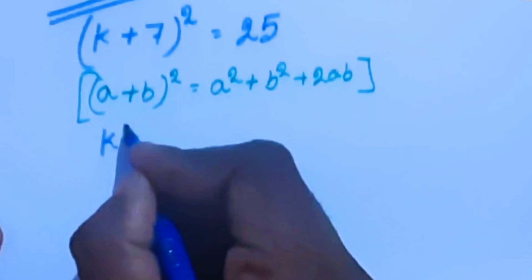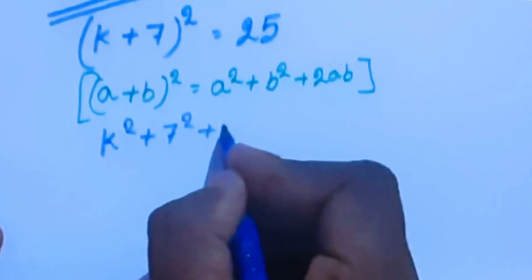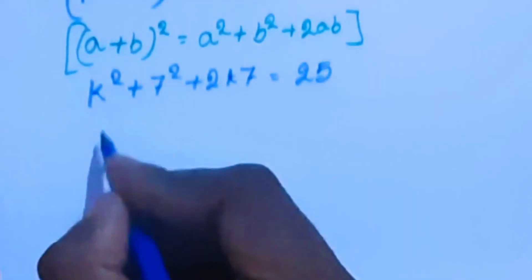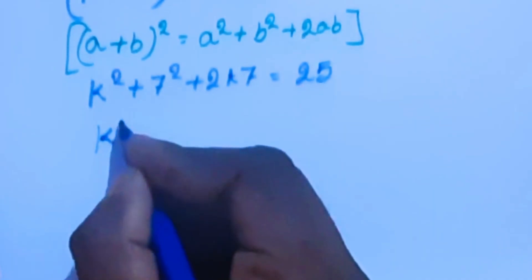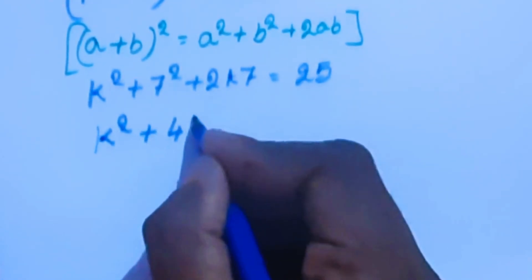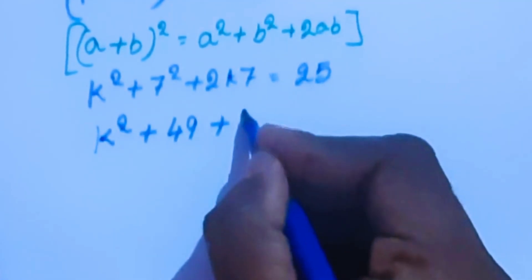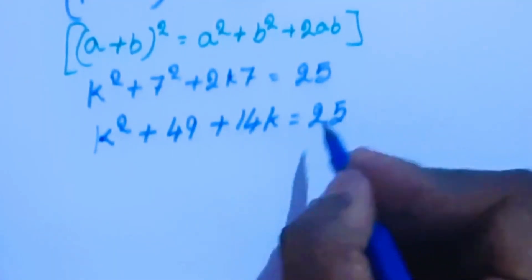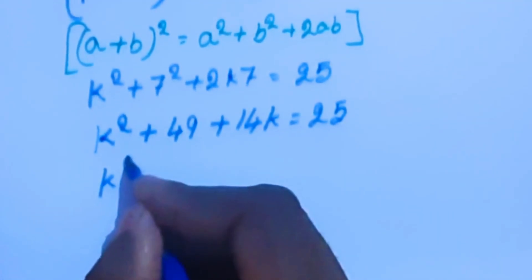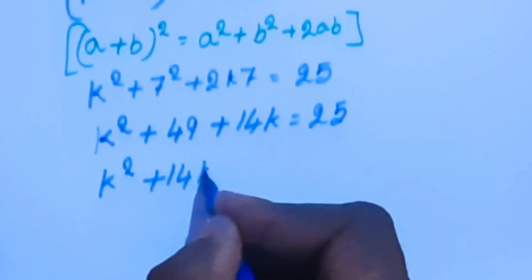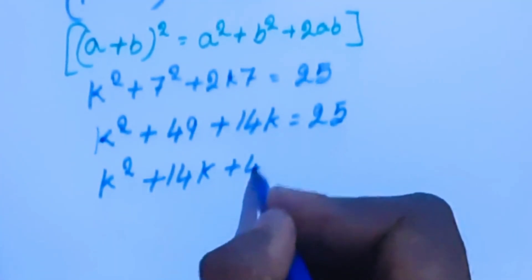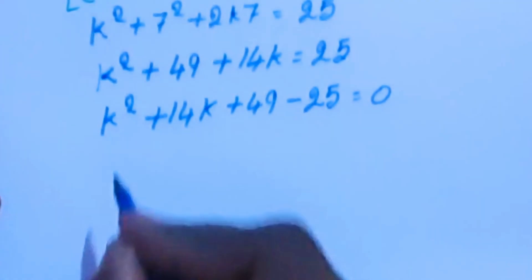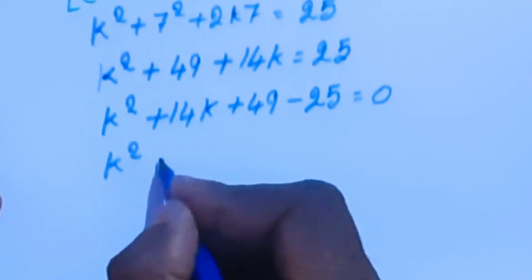k squared plus 7 squared plus 2k times 7 equal to 25. Now 7 squared is 49, and 2 times 7 is 14, so we have k squared plus 49 plus 14k equal to 25. Moving 25 to the left-hand side, we get k squared plus 14k.